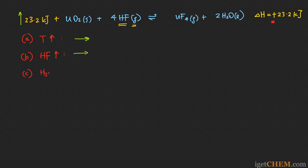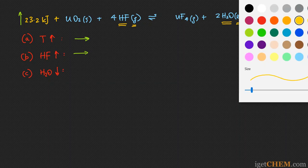Part C: if I remove H₂O, you notice that H₂O is on the product side, but H₂O is actually a liquid. Because a pure liquid or a pure solid has no concentration, they don't show up in the equilibrium expression. So if you remove either a pure liquid or a pure solid from an equilibrium, it would have no effect on the equilibrium position. The answer to C is: no change.